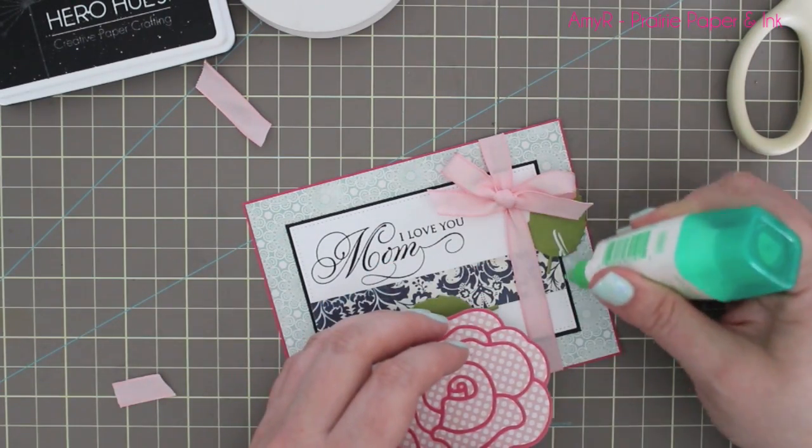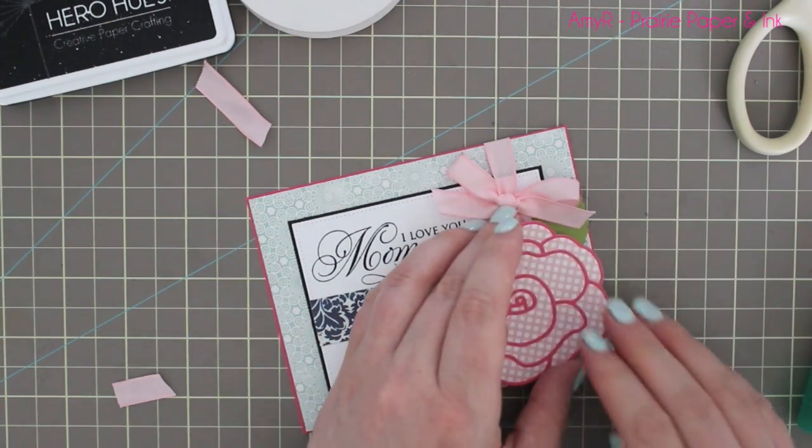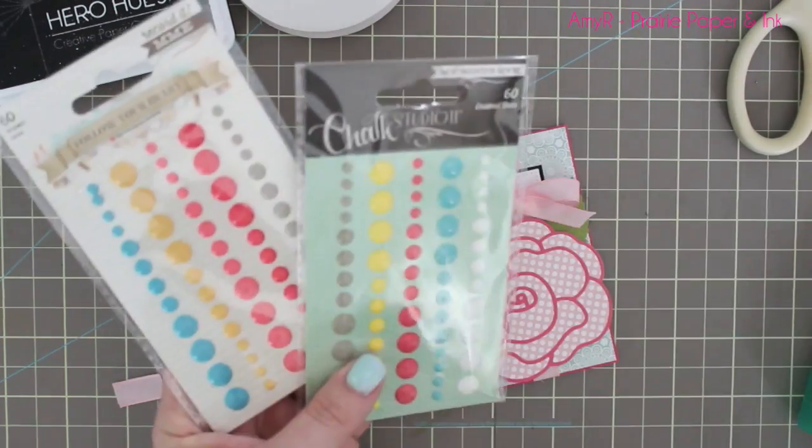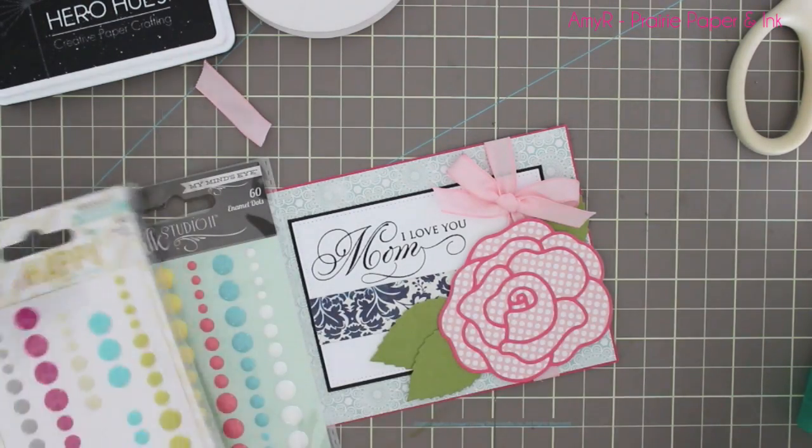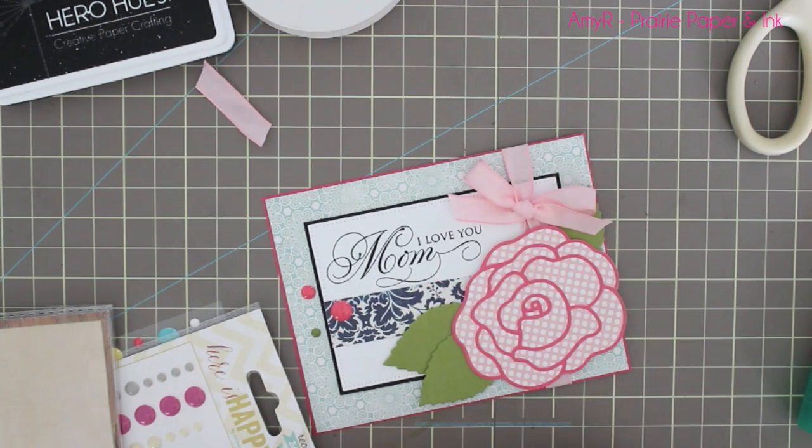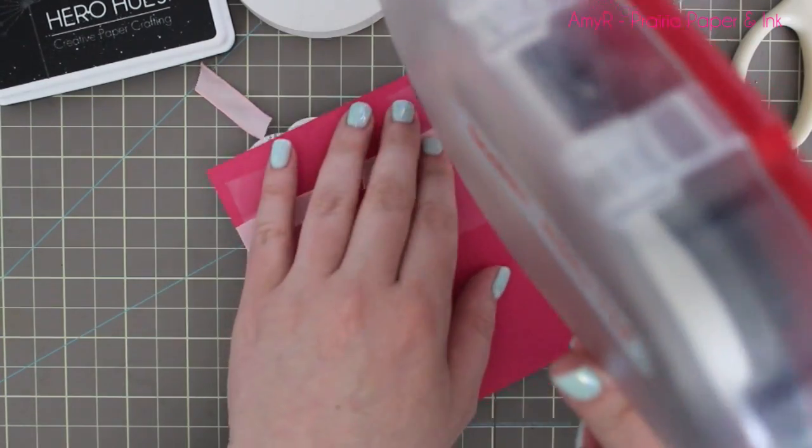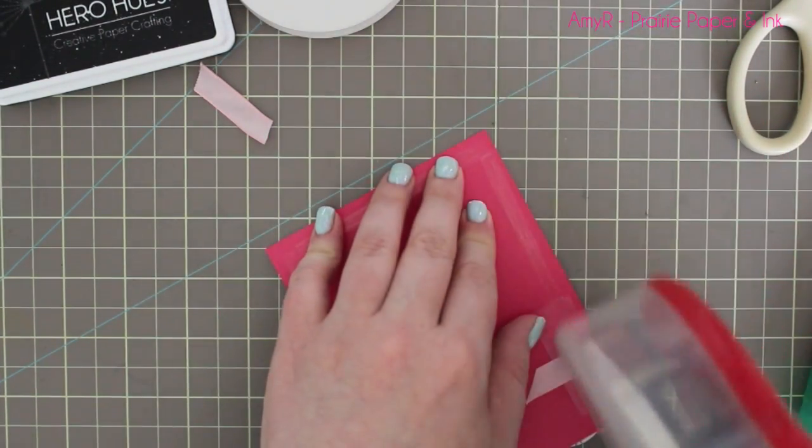Finally, I wanted to add a few little embellishments, so I grabbed some of my enamel dots—these are My Mind's Eye ones. I grabbed the packs that I had to see if I had any colors that would go well, and one pack had a pink that matched pretty well and the other pack had a green that matched really well. I grabbed a few of those and pressed them into place.